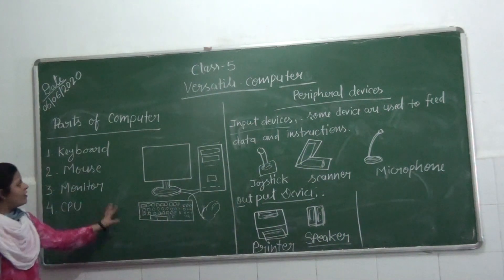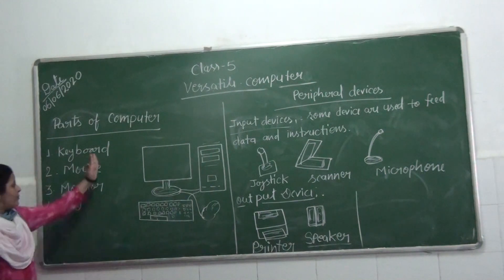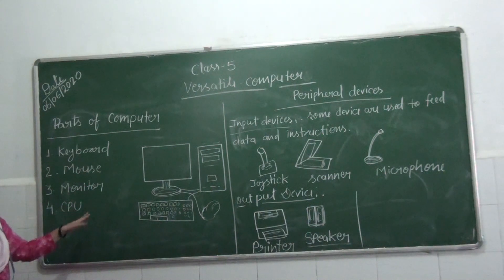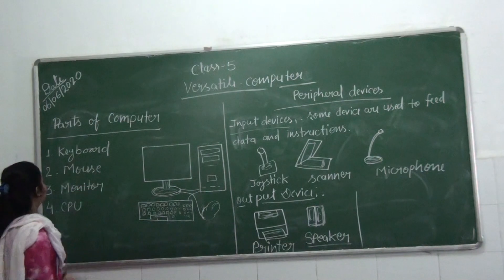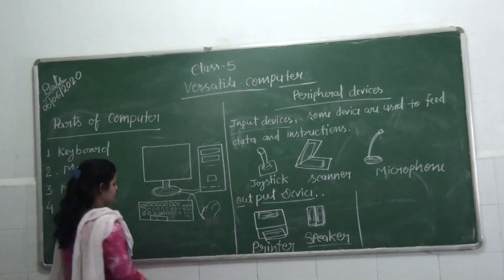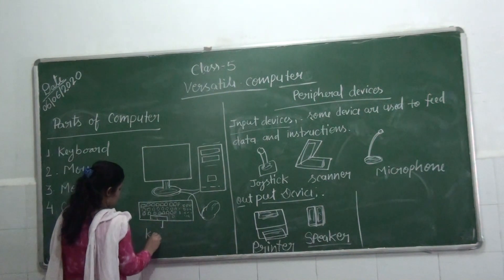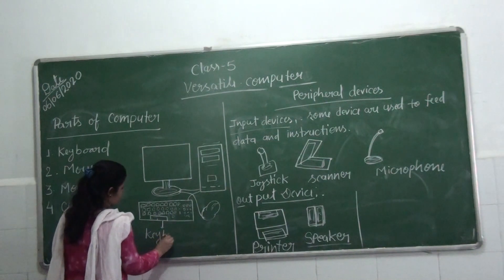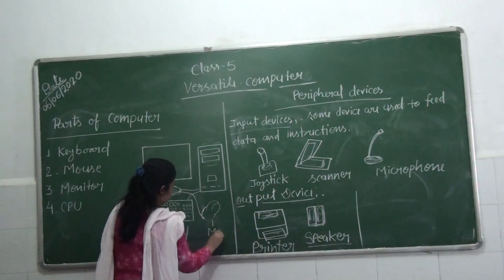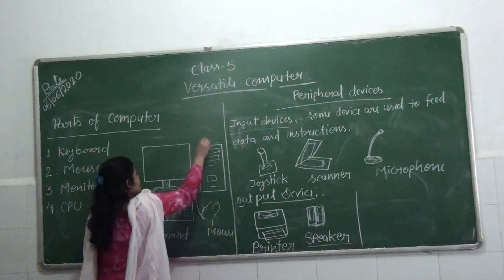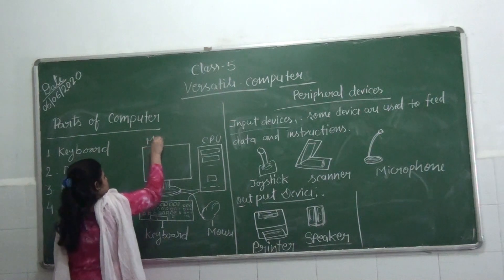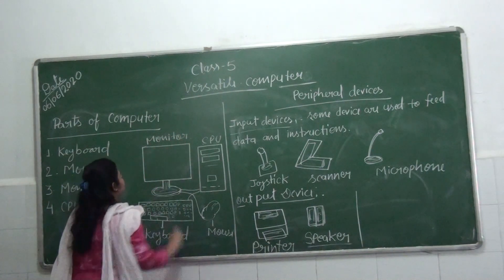Students, we all already know that there are 4 main parts of the computer. The 4 main devices in computers are: keyboard, mouse, monitor, and CPU. This is the keyboard, this is the mouse, this is the CPU, and this is the monitor.